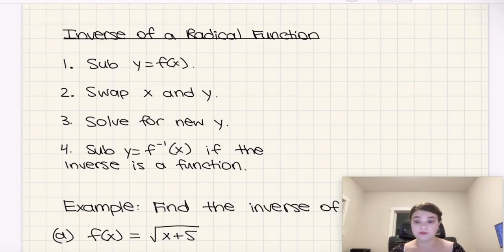So just a quick review, how do we find the inverse of a function in general? Well, we need to sub y equals f of x, then swap x and y to solve for the inverse, then solve for the new y. And then if the inverse is also a function, we need to switch to function notation at the last step as well.